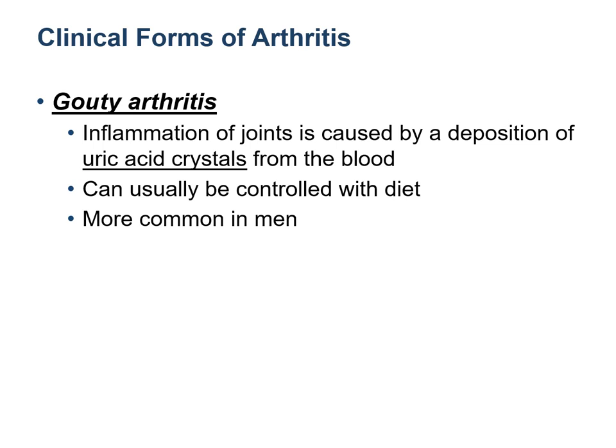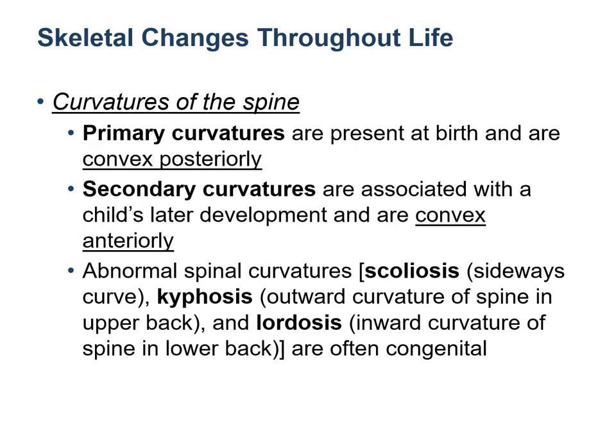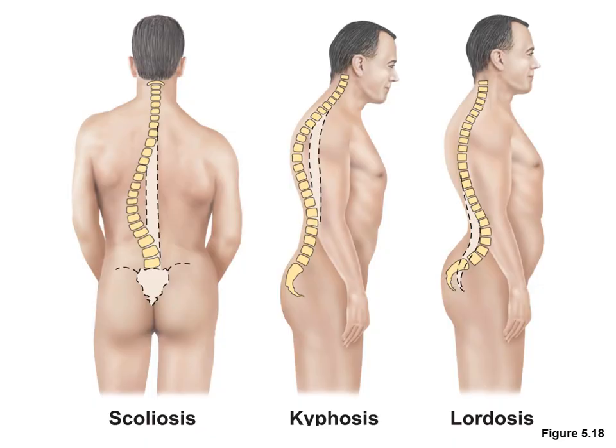Arthritis caused by the deposition of uric acid crystals, which are toxic waste products of the body, is known as gouty arthritis and can usually be brought under control with diet. Skeletal changes occur throughout life. In addition to the normal primary and secondary curvatures of the vertebral column, there are abnormal spinal curvatures: scoliosis is a sideways curve, kyphosis is an outward curve in the upper back, and lordosis is an inward curve in the lower back.